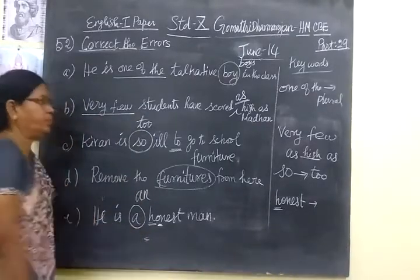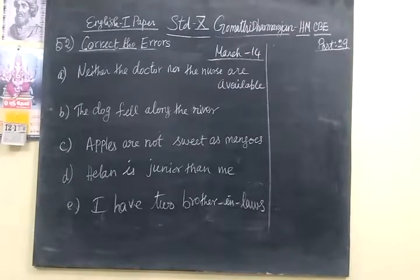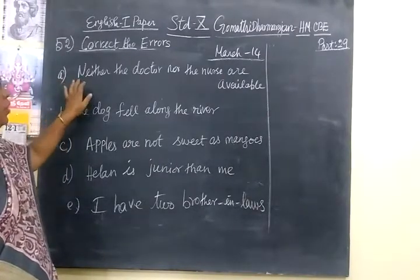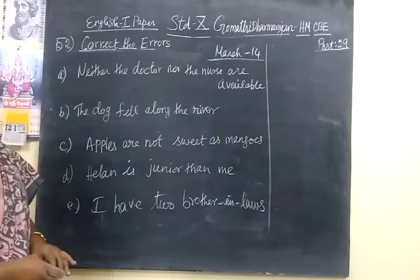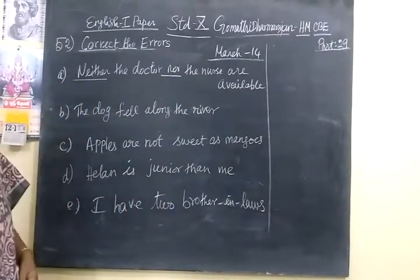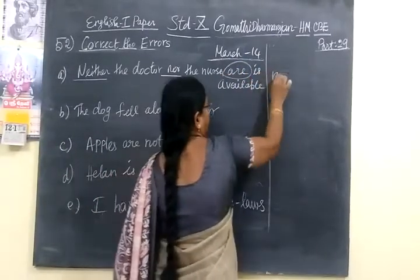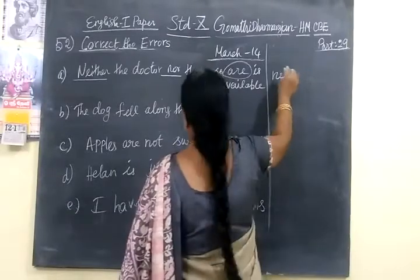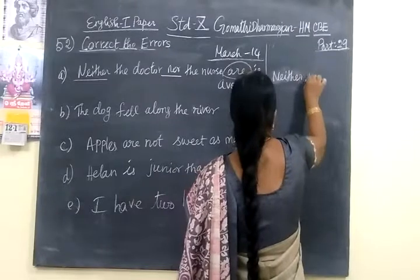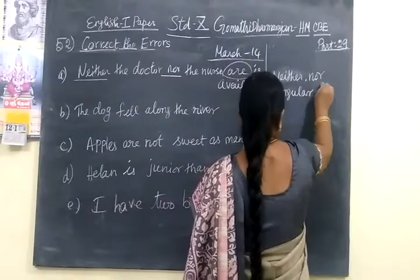Now for March 2014, question A: 'Neither the doctor nor the nurse are available.' The keyword is 'neither...nor.' Neither...nor means you have to use only singular form. So instead of 'are' you have to write 'is.' The keyword is 'neither...nor' — use only singular form.